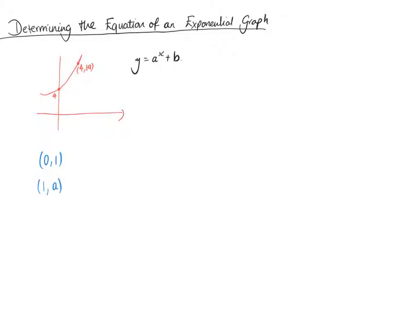The (1,a) part might not help us here, but the (0,1), that really should. So we know that the graph should go through (0,1), but it actually goes through (0,4).